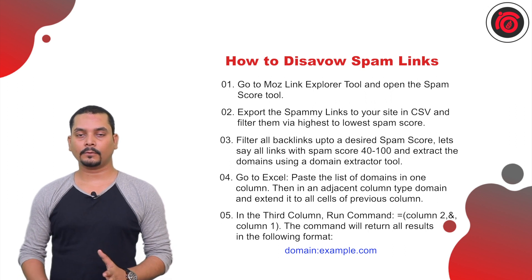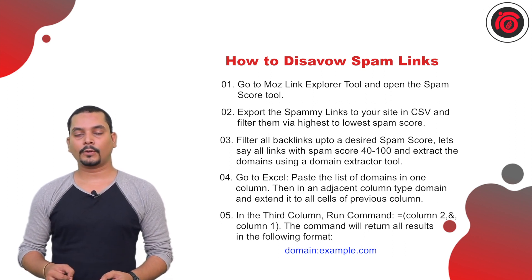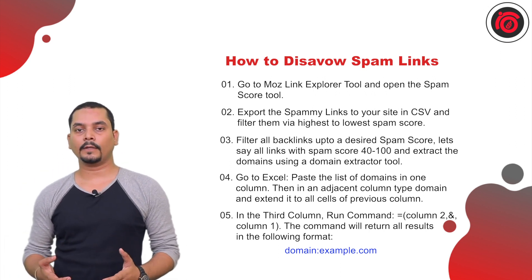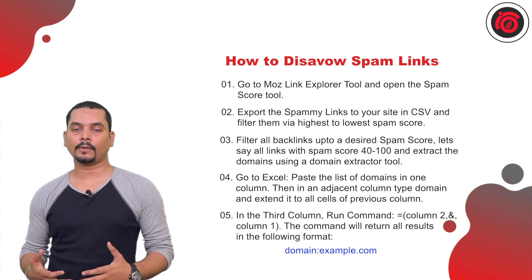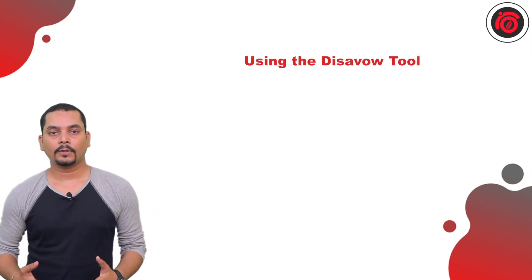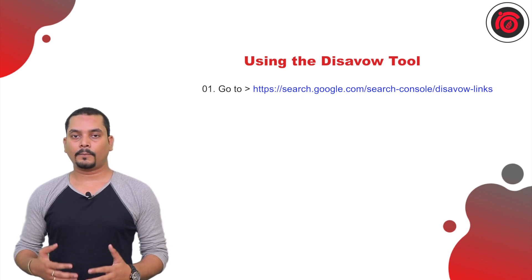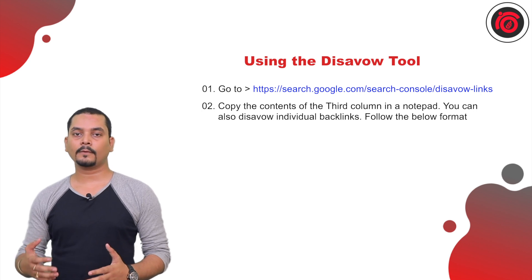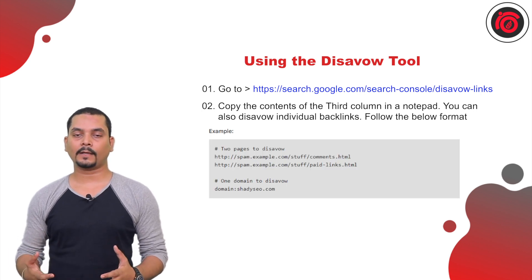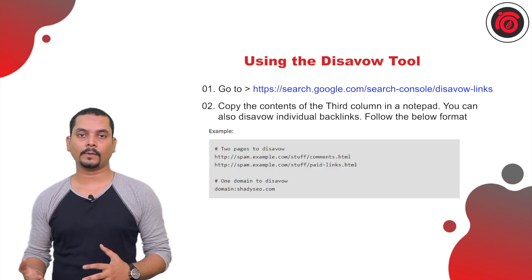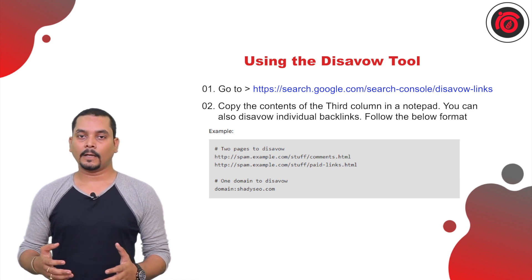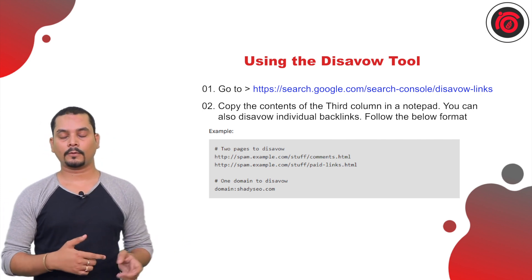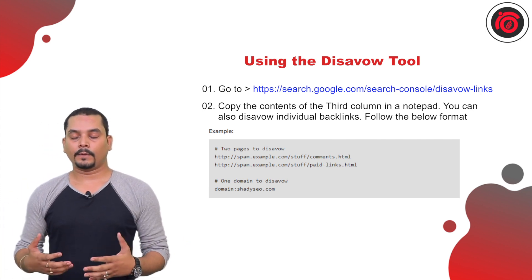We can sort the backlinks according to low domain authority. To disavow these backlinks, we go to the Google Disavow Tool. From there, we create a separate list in a notepad where we filter all the backlinks extracted from Moz, and then run the command as seen in the dashboard.